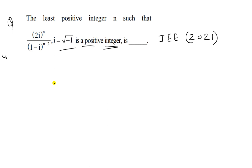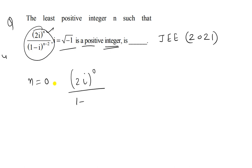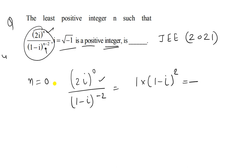Now, for which value of n will this expression be a positive integer? If we put n = 0, the numerator (2i)^0 = 1, and the denominator becomes (1 - i)^(-2), which gives minus 2i. So n = 0 is not possible since the result is not a positive integer.